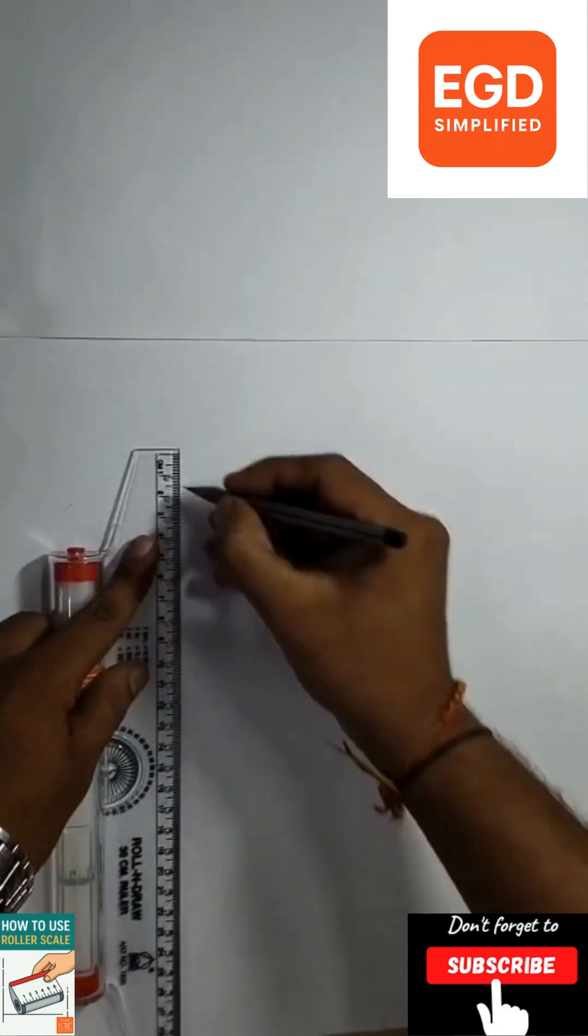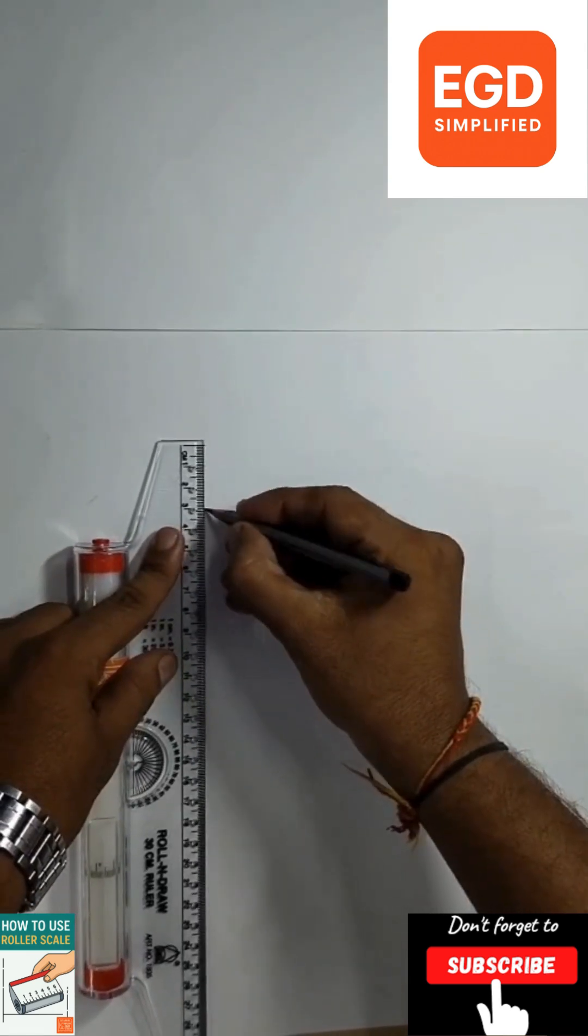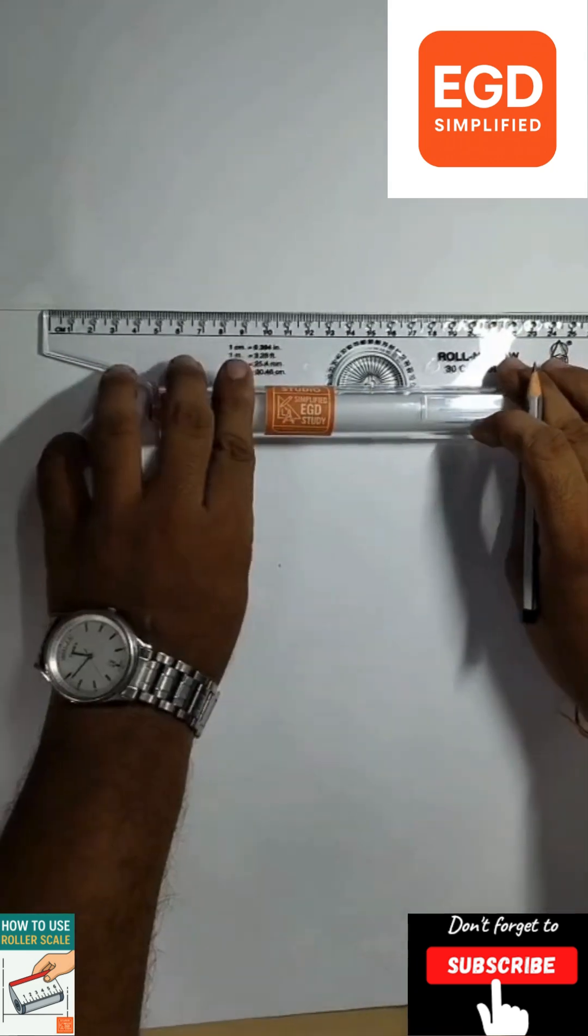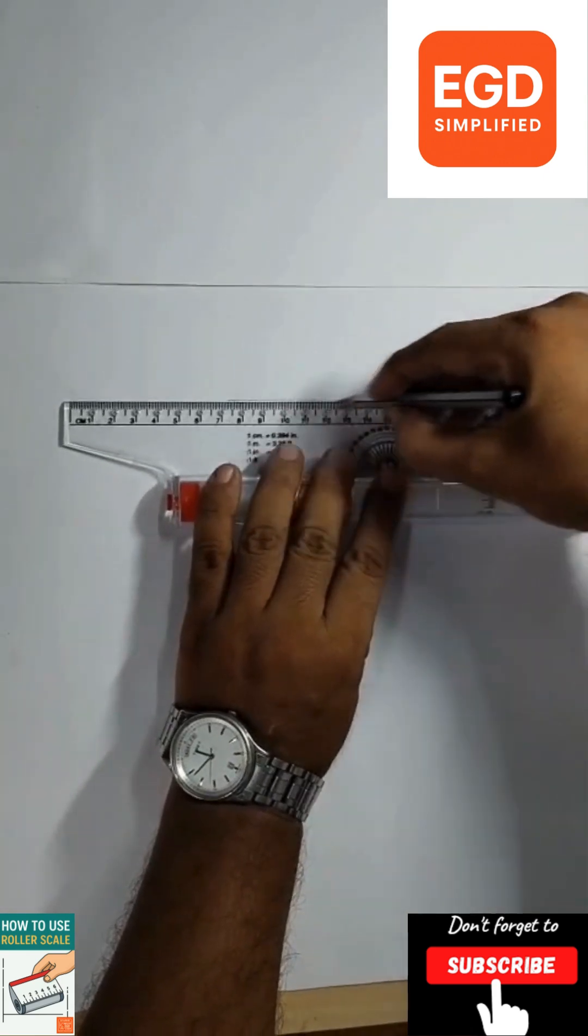To draw parallel and perpendicular lines, we will mark different points as per our requirements. Now take a reference of the border and simply roll the roller scale.